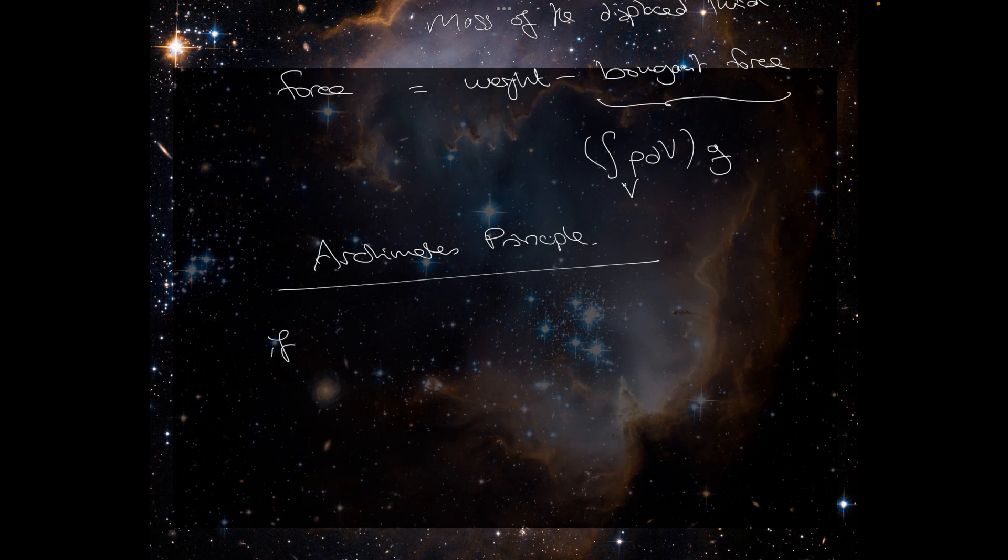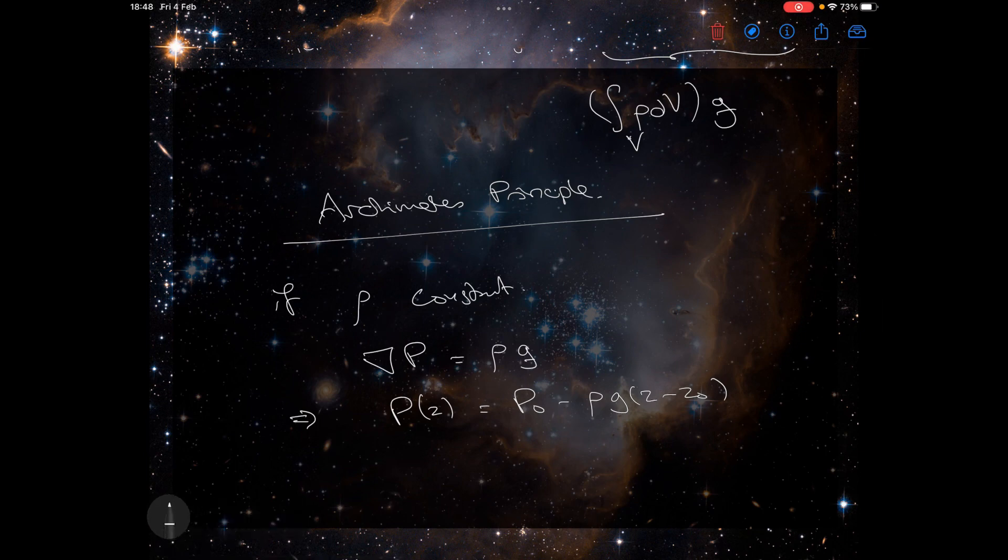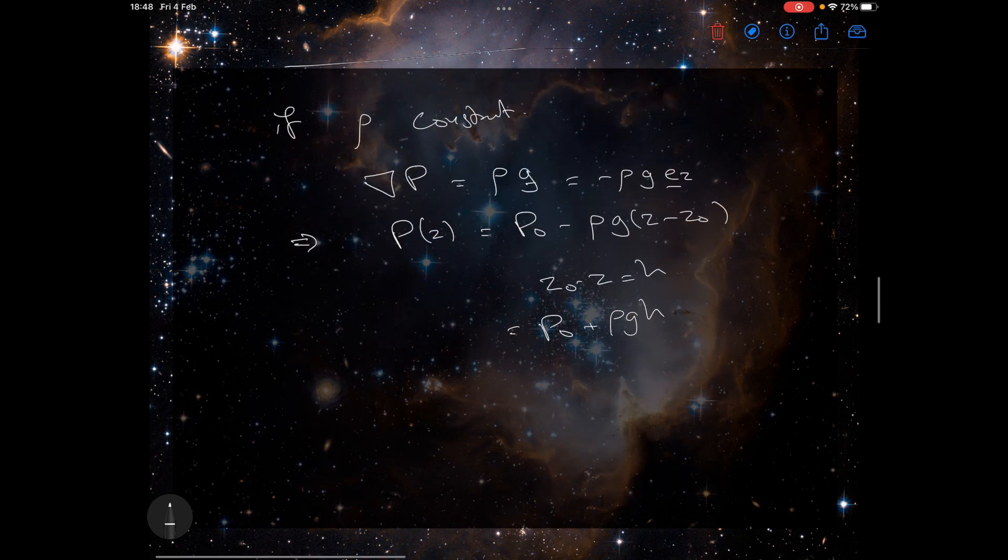As a quick example, if rho is constant, that is the density is constant, then grad P equals rho G implies that P, which is now just a function of Z, is going to be equal to P naught plus rho G times Z minus Z naught. We need a minus sign, of course. Because that's equal to minus rho times scalar G times the vector E_Z. And we see that Z naught minus Z is H. So that's P naught plus rho G H, which is the formula you get from school level physics.